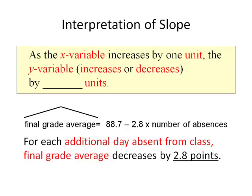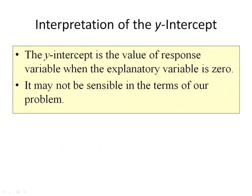The grade average decreases because the sign on the slope is negative — as the number of absences increases, final grade average tends to decrease. Now let's talk about interpreting the y-intercept. The y-intercept is the value of the response variable (y) when the explanatory variable (x) is zero.